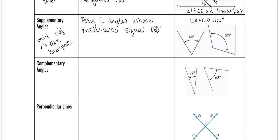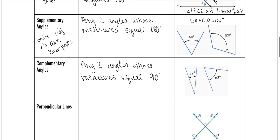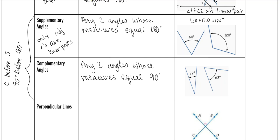Complementary angles are any two angles whose measures equal 90 degrees. An easy way to remember: C comes before S in the alphabet, and 90 comes before 180. So in alphabetical order, 90 comes before 180. That's how you can tell the difference between supplementary and complementary — just a little trick. And 27 plus 63 does equal 90, which makes complementary angles.